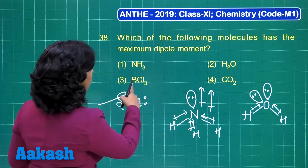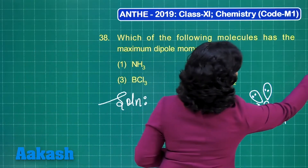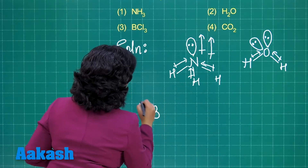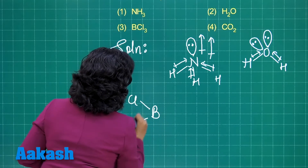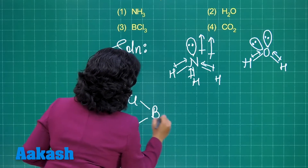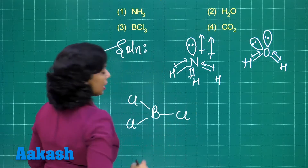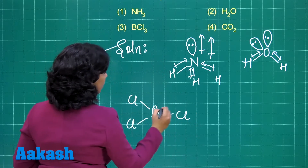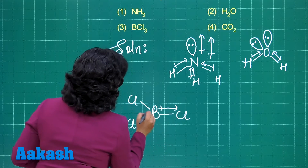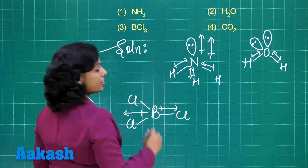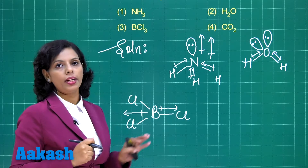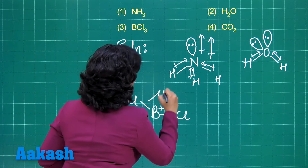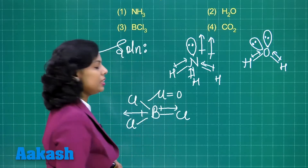But if I talk about BCl₃, let us check the structure of BCl₃ here. In this case there is no dipole moment — the reason is there is cancellation of polarity, and that is why the value of the dipole moment, mu, is 0.